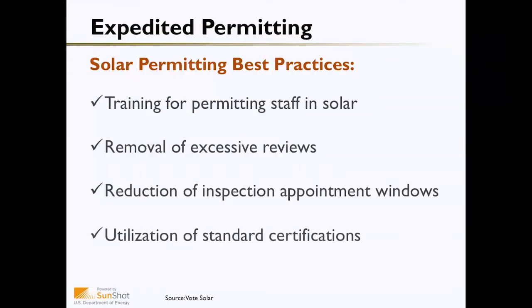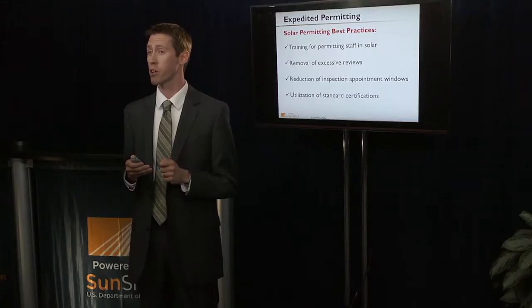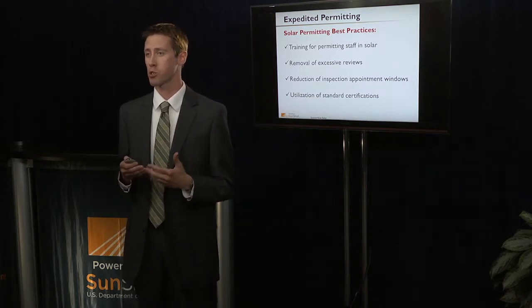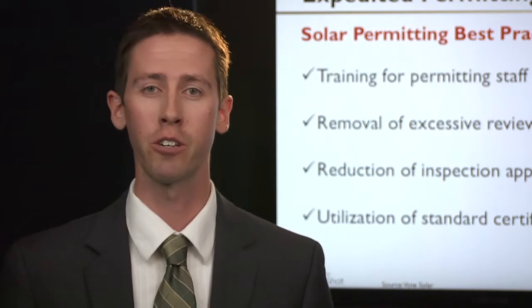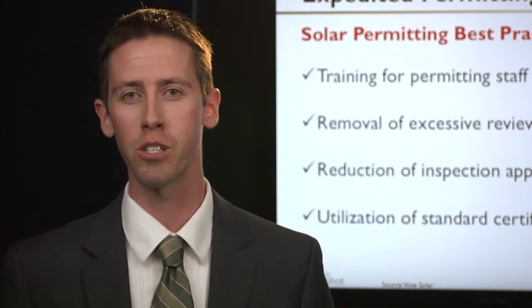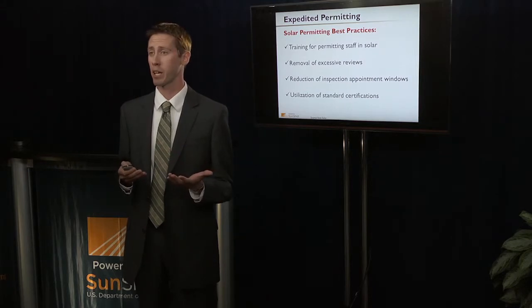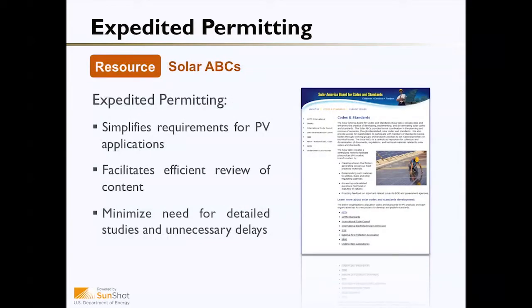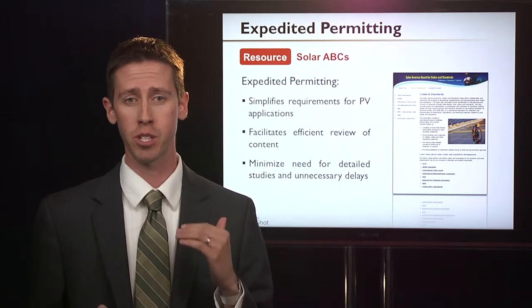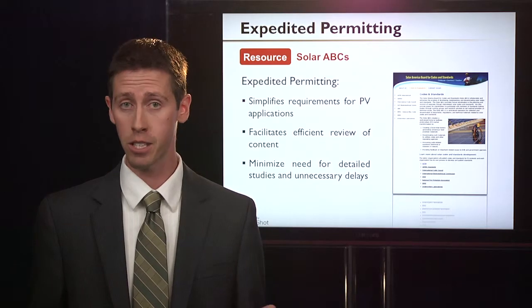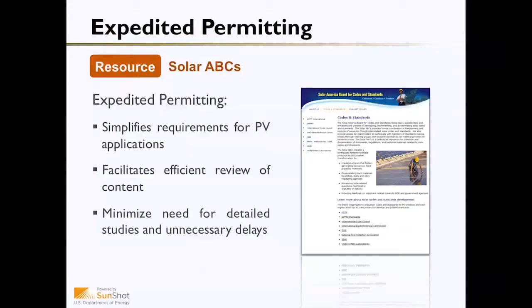The utilization of standards and certifications is also important. There are ways to verify whether installers have national certifications in place, and a fast-track or more streamlined process may be available for installers who meet those certifications. Most panels, equipment, and inverters are tested by national and international testing, rating, and certification agencies. As long as panels and equipment meeting those standards are used, that may help eliminate the need for excessive reviews while still maintaining public health and safety requirements. A great resource for expedited permitting is the American Board of Codes and Standards' expedited permitting guide, which provides language for simplified PV application requirements and facilitating efficient review while minimizing unnecessary delays.